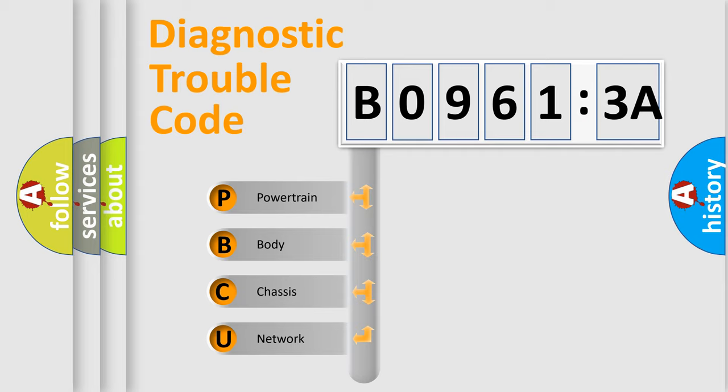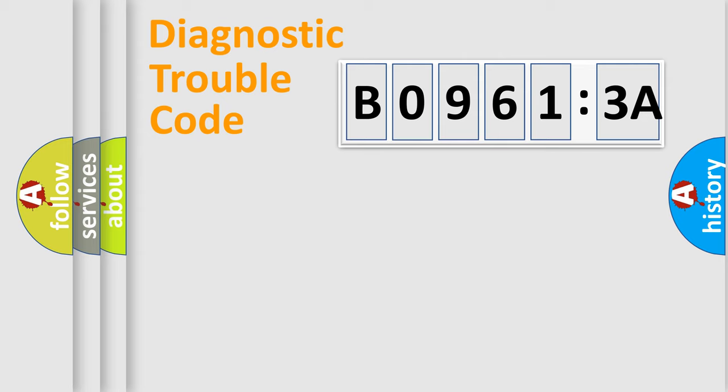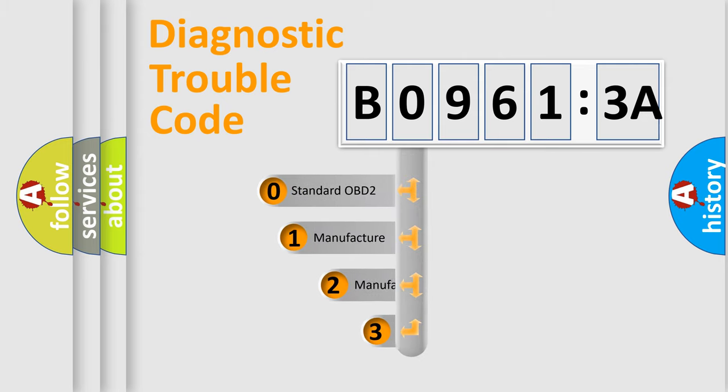We divide the electric system of the automobile into four basic units: powertrain, body, chassis, and network. This distribution is defined in the first character code.